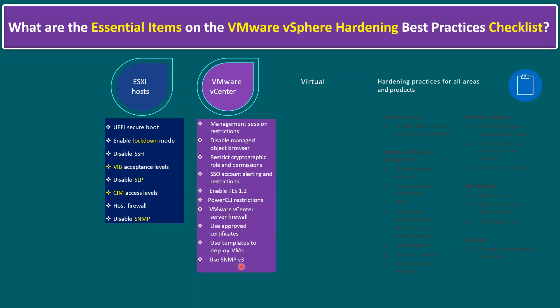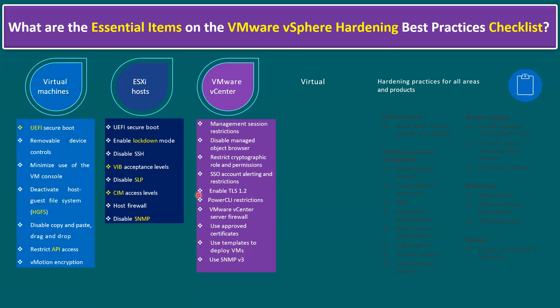Use SNMP version 3. Instead of version 1 and 2, the recommendation as part of hardening is to use only version 3. To manage multiple ESXi hosts, we have VMware vCenter server, and then we can deploy virtual machines. Even at the virtual machine level, there is a hardening checklist. Same as ESXi, virtual machines are also recommended to use UEFI Secure Boot — Unified Extensible Firmware Interface Secure Boot.